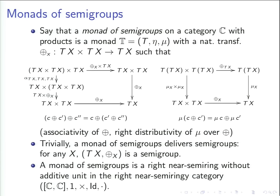What is a monad of semigroups? It is supposed to be a monad, but with some extra stuff. Essentially, the monad — if you look at its underlying functor — is also a monoid, not with respect to the composition structure of the category of endofunctors, but with respect to the product structure. So there is a natural transformation from T cross T to T, satisfying a law which is exactly associativity, stated on the level of a functor. The functor category has this product monoidal structure, and this thing is a monoid in this monoidal category.